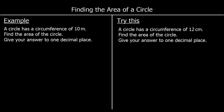And one more example. This time a circle has a circumference of 10 metres — find the area of the circle, give your answer to one decimal place. The circumference of a circle is either pi times diameter or 2 times pi times r. The circumference is 10 metres, and we're going to find the radius using 2 times pi times r, because we need the radius to work out the area. We'll find the radius first, and then once we've got the radius, we'll find the area.